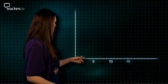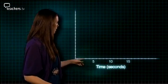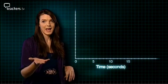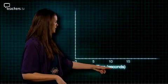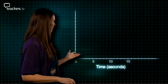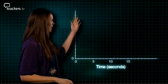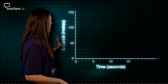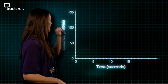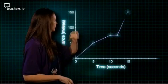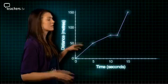We've got the horizontal axis, which is the one across the bottom, also known as the x-axis, and this is labelled as time in seconds. Then we've got our vertical axis, which is the y-axis, and this is labelled as distance in metres.